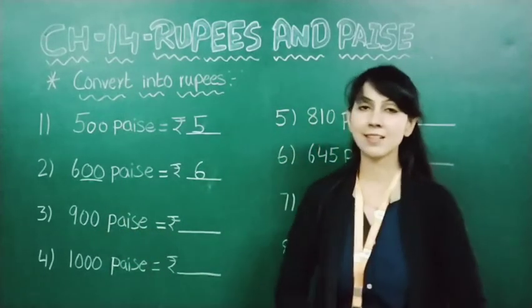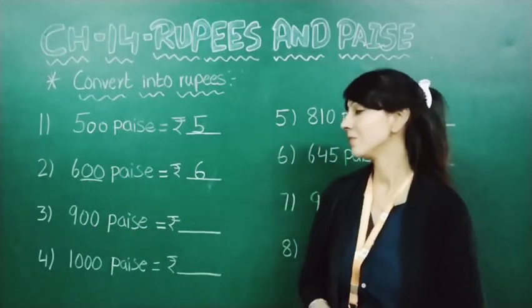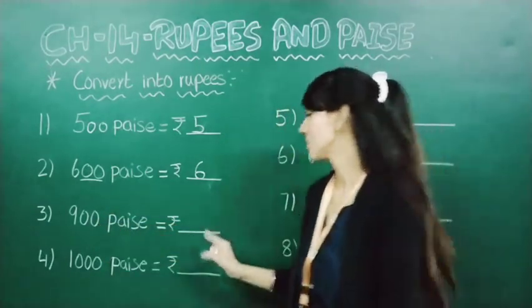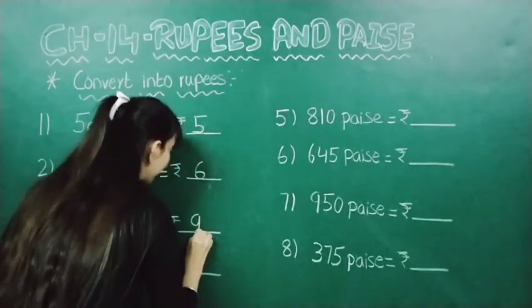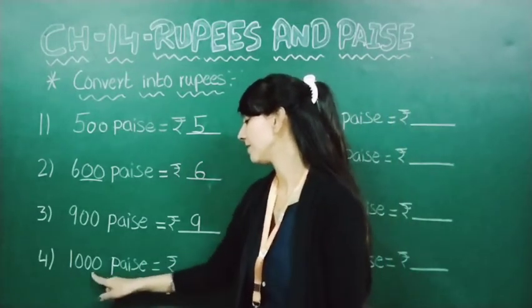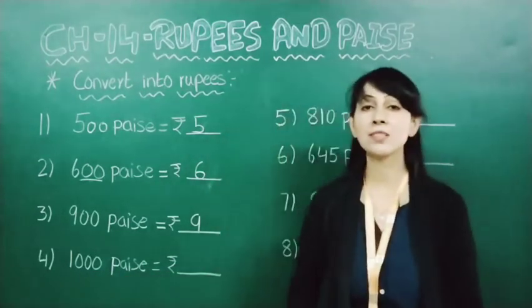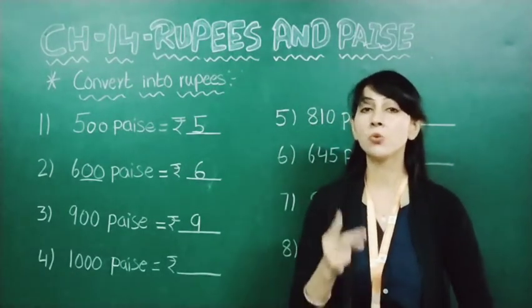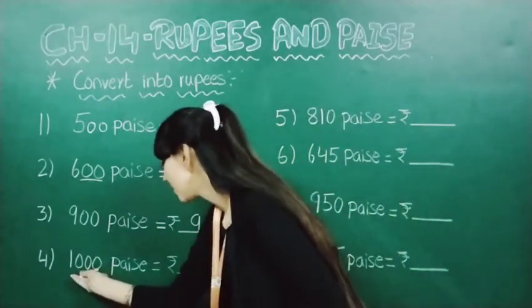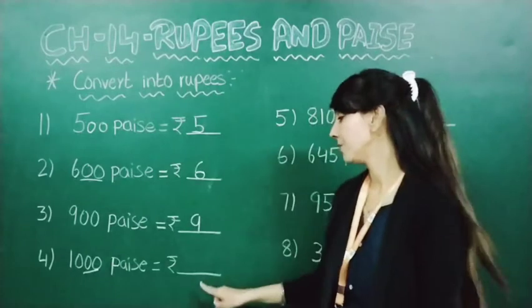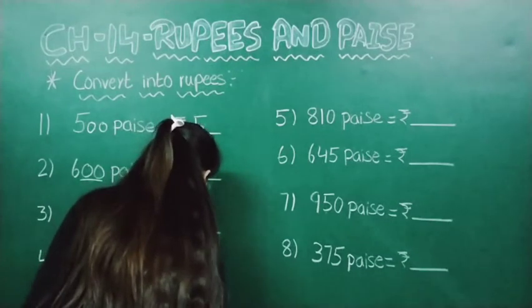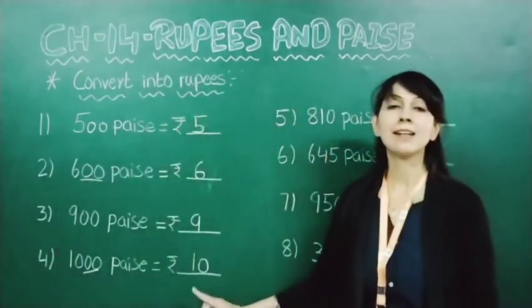Now 900 paise. So how will we write this? We will write only 9, and we will just remove these two zeros. So this will become 9 rupees. Now here you can see it's written 1000 paise. We have to remove only two zeros that you can see on the right side. So this will become 10 rupees.